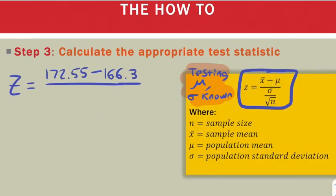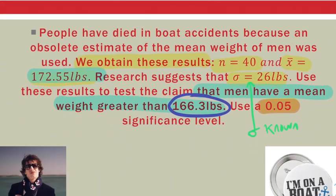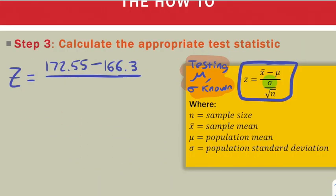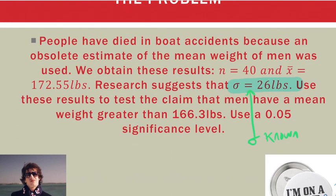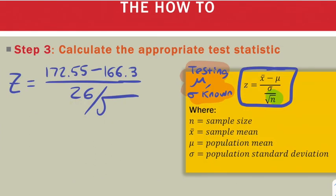And since we know sigma, we can enter that next. We were told at the beginning of this problem that our sigma is 26. So 26 goes here. And then we need to divide by the square root of our n, which was also in that original information that our n is 40. So I put 40 here.